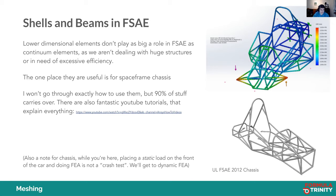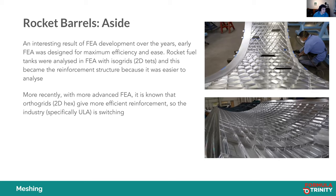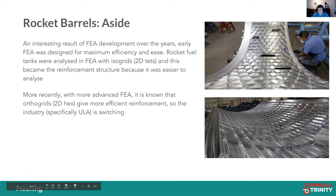As an aside: the structure of the inside of a rocket barrel is entirely dependent on FEA. In the 1990s when 2D tets were most efficient, rocket barrels used an isogrid (triangular shapes). Now that hexahedral elements can be solved more efficiently, the rocket industry has switched to hex reinforcement — entirely because FEA technology developed.